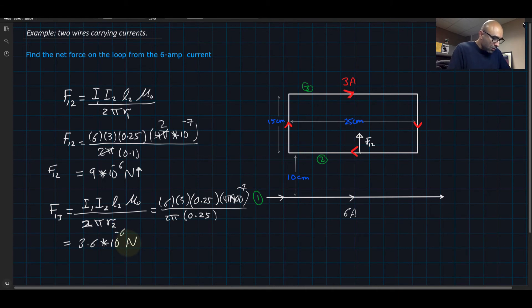Let's check the direction. This one is going this way and this one is going the same direction, so F1 on 3 will be attractive this way.